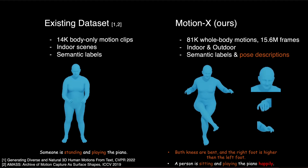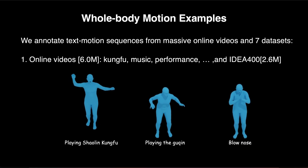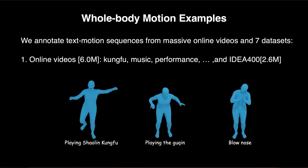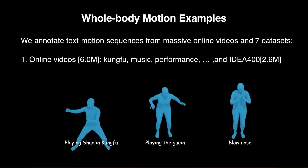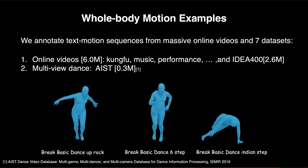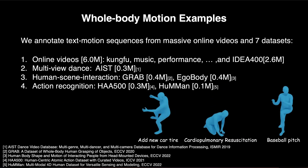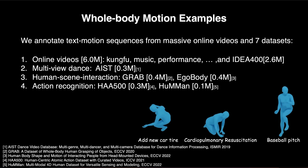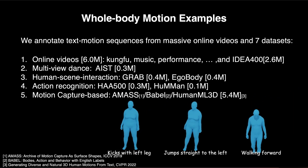We also provide sequence-level semantic labels and detailed frame-level whole-body pose descriptions, covering indoor and outdoor scenes. We annotate text motion sequences from massive online videos and seven datasets. Here we show some text motion examples, such as online videos, multi-view dance motions from the AS dataset, human scene interaction datasets Grab and EgoBody, action recognition datasets HAA500 and Hummin, and motion capture-based dataset AMASS.